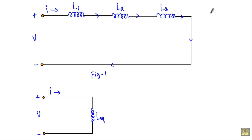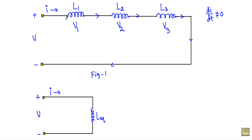When there is a change in current, that means dI/dt will not be equal to 0, we will get a voltage across the inductors. The voltage across L1 is V1, across L2 is V2, and across L3 is V3. Since current enters from one direction, the entering side will be positive and the other side negative for each of L1, L2 and L3.